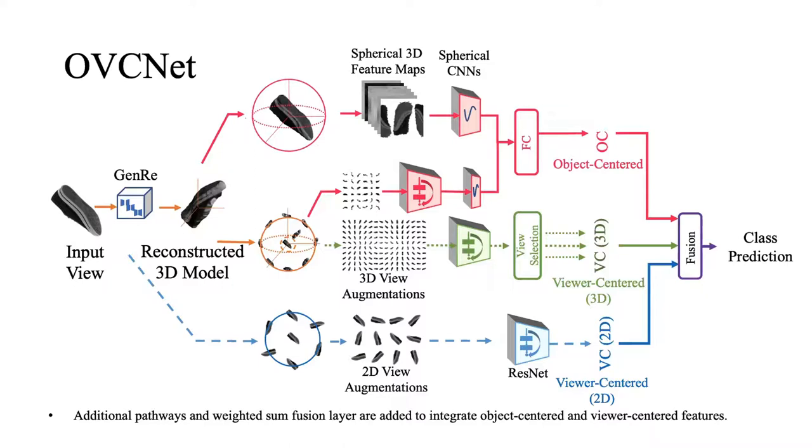To further integrate the viewer-centered object-centered features, we have created an assistance branch that takes viewer-dependent features from a 3D viewer-centered branch and constructs a new type of spherical map with viewer-centered features to assist object-centered learning.